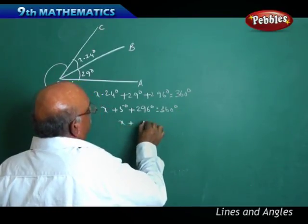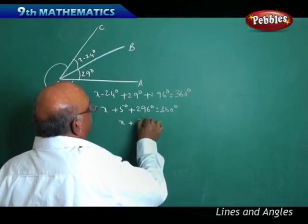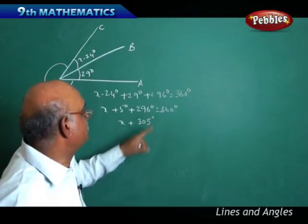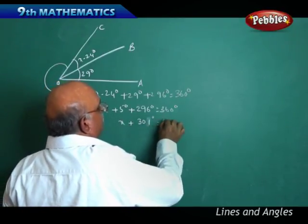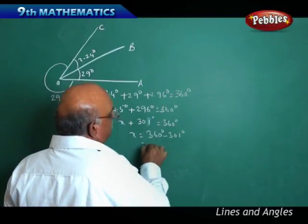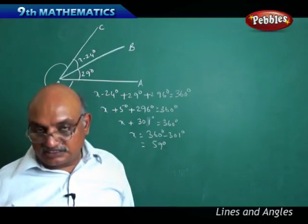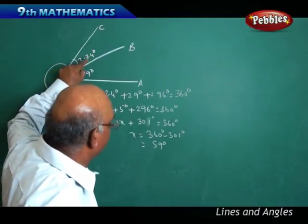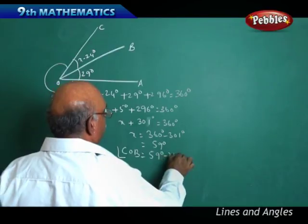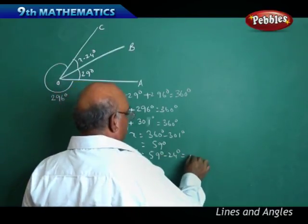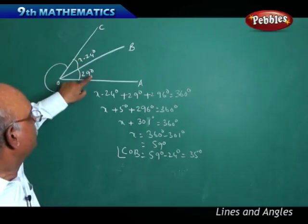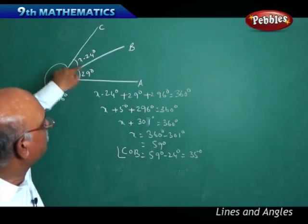Simplifying: X plus 5 plus 296 equals 360, so X plus 301 equals 360, giving X equals 59 degrees. Therefore angle COB equals 59 minus 24 equals 35 degrees. Verification: 35 plus 29 plus 296 equals 360 degrees.